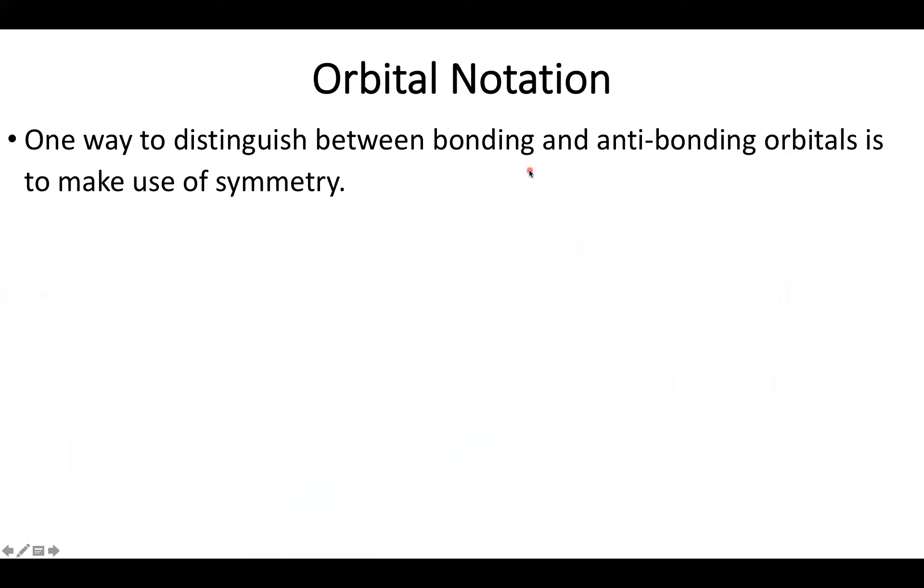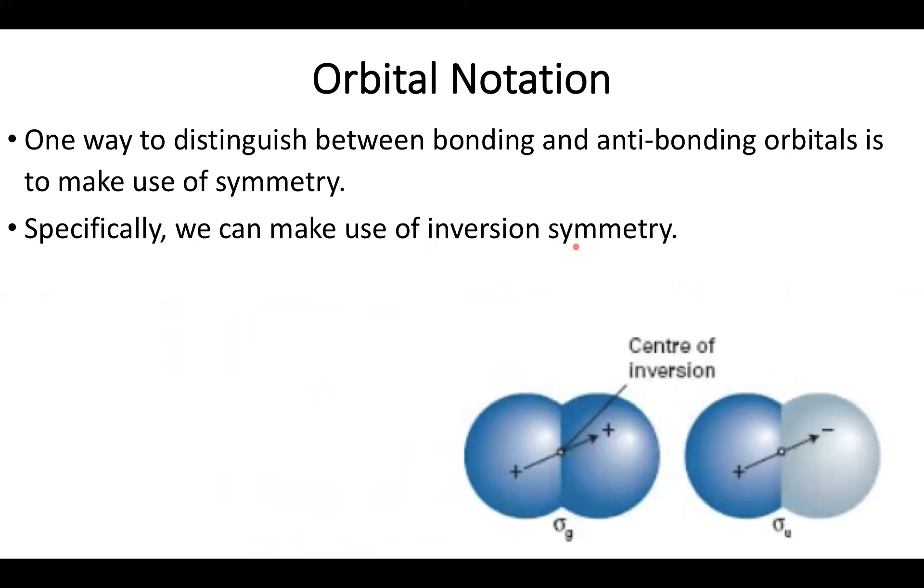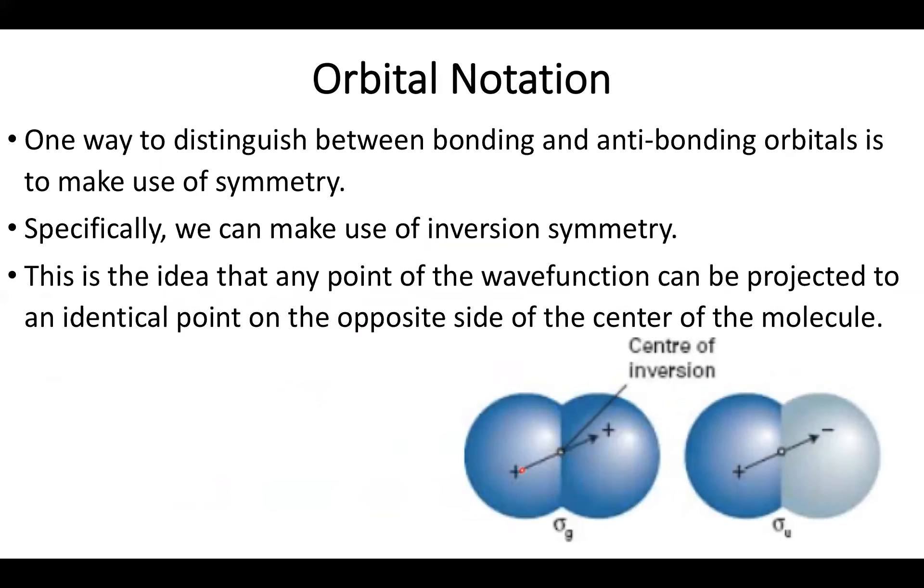We're going to make use of something called inversion symmetry. The idea of inversion symmetry is I have a center of my molecule, which I'm going to call my center of inversion. I can then project my wave function from one point to an identical point on the opposite side of the molecule. These two distances will be the same, just making a line from the point I'm at to the center of the molecule and then going to the equal point on the opposite end. It turns out there is a useful kind of symmetry where the point I started at and the point I ended at have an identical amplitude of the wave function and an identical sign. If this happens, it's called gerade symmetry. This is German for even symmetry because it's even on either side.